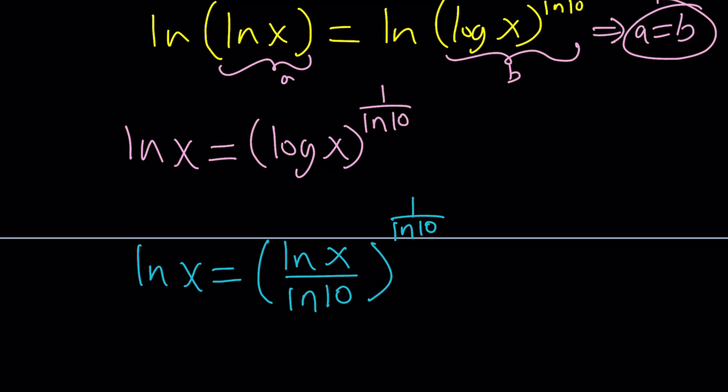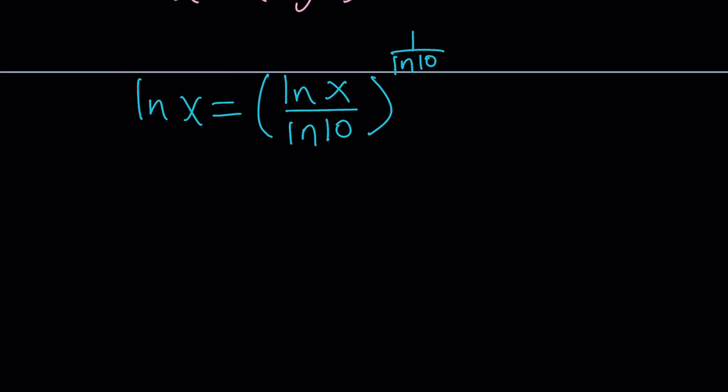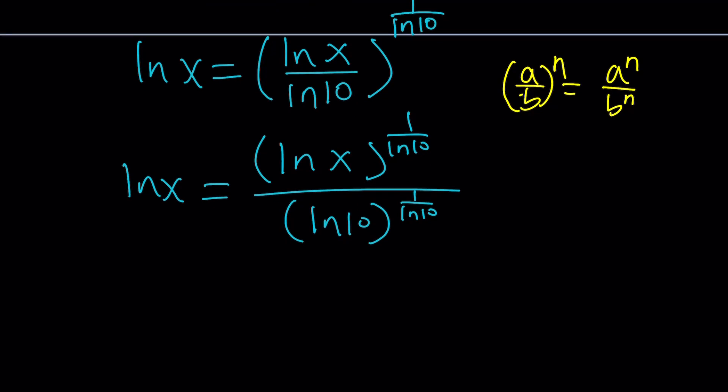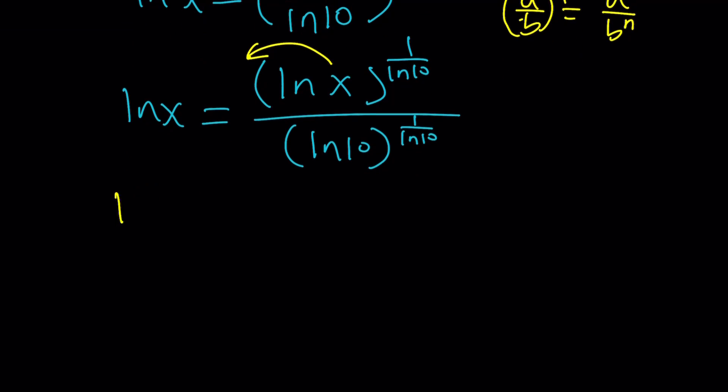We're super close to the solution. What we need to do is bring everything with x on the same side and then the constants on the other side. So let's apply properties of exponents to this ln x to the power one over ln 10 divided by ln 10 to the power one over ln 10. Here I use the property that if you have a over b to the power n you can write it as a to the n over b to the n. Of course b should not be zero. Now we have all the ln's on the same side.